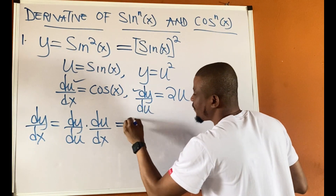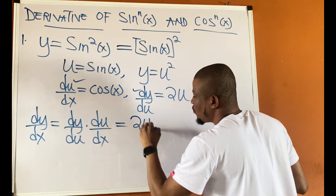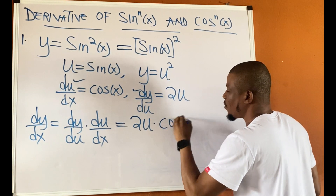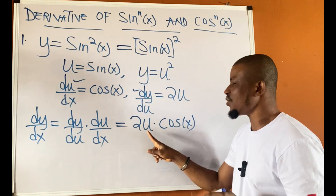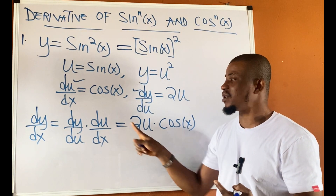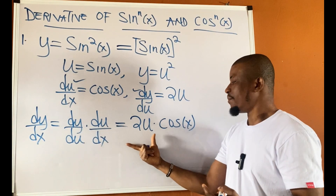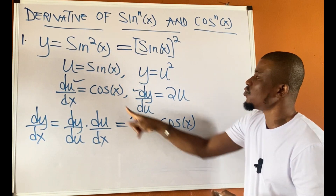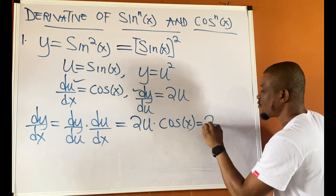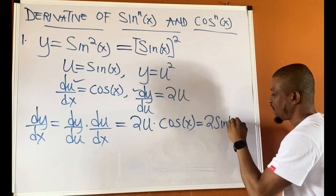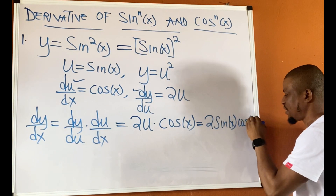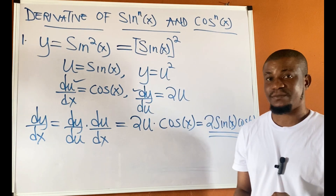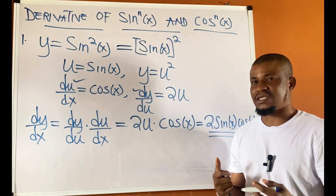So dy/dx equals dy/du times du/dx. dy/du gives me 2u, and du/dx gives me cos x. But I need to rewrite the value of u because I'm looking for dy/dx, so my final answer should be in terms of x. Rewriting u as sin x, I will have 2·sin x·cos x, and this is my dy/dx.